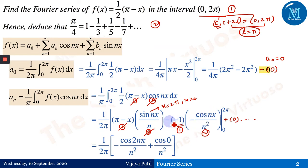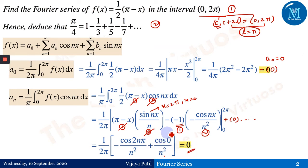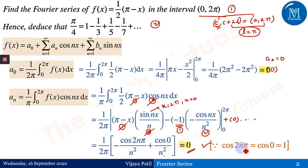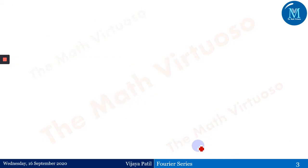We are left with the cos(nx) term only. Applying the limits: at the upper limit x = 2π we get cos(2nπ)/n², and at the lower limit x = 0 we get cos(0)/n². Since cos(2nπ) = 1 and cos(0) = 1, we get -1/n² + 1/n² = 0. Therefore aₙ = 0.